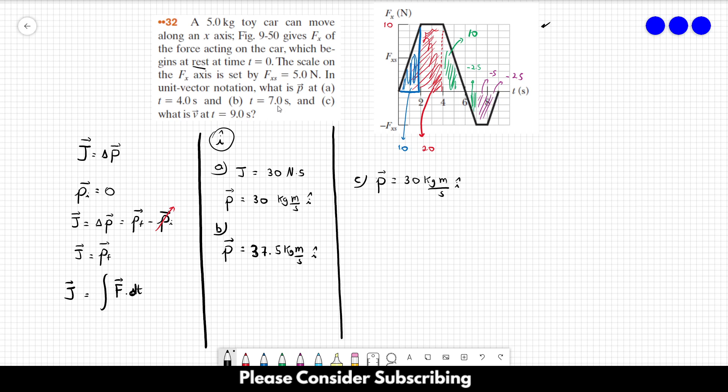So in this case, let's remember that linear momentum is equal to mass times the velocity. So the velocity is equal to the momentum divided by the mass. So this is equal to 30 over 5 in the i-direction, which is equal to 6 meters per second in the i-direction.